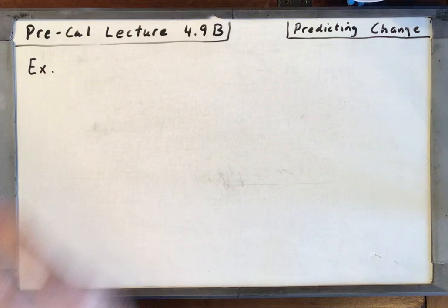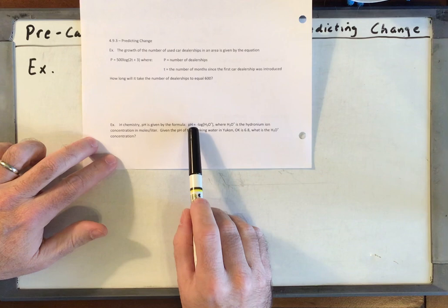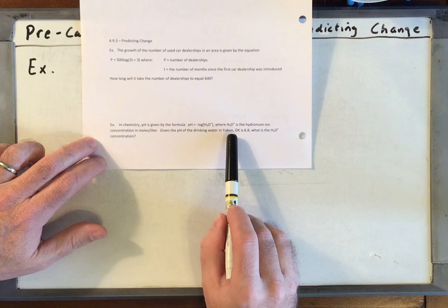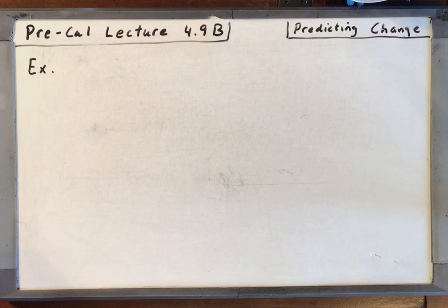All right, so our last problem will be the very bottom one on the page. It says in chemistry, pH is given by the formula pH is equal to the negative log of the hydronium ion concentration. That's H3O+ in moles per liter. Given the pH of the drinking water in Yukon, Oklahoma is 6.8, what is the hydronium ion concentration?